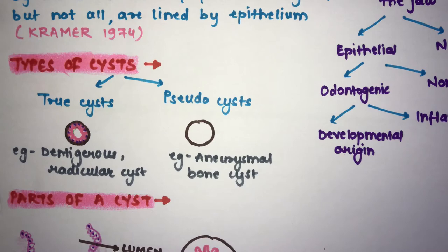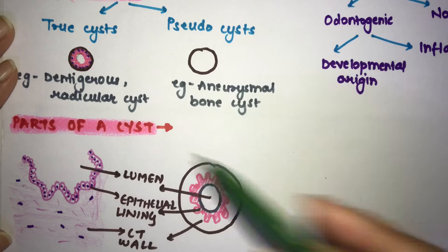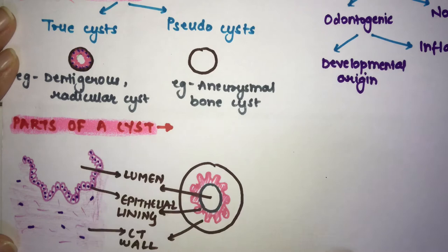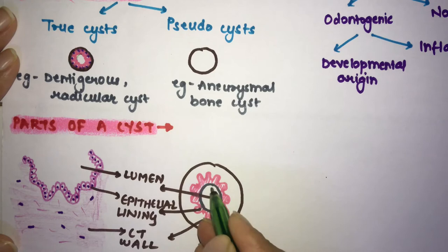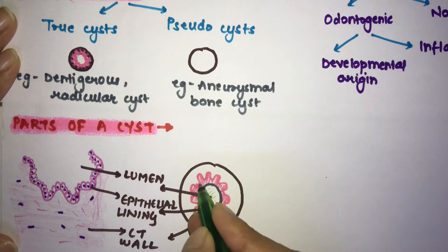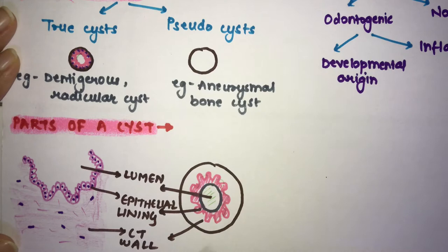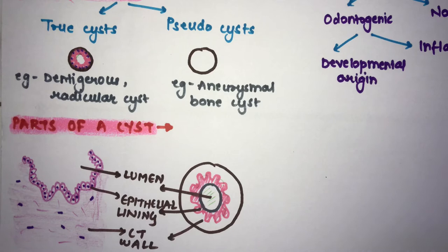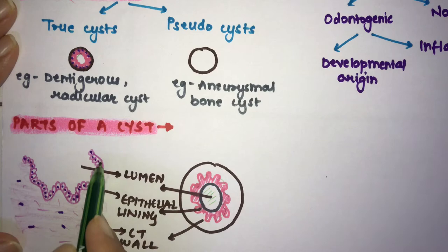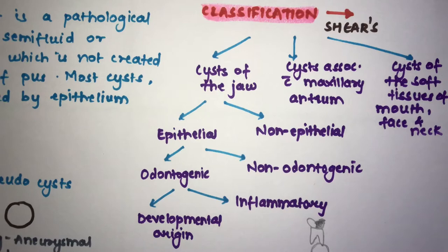The parts of a cyst are: the epithelium lining, the lumen, and the connective tissue wall. The lumen is the cavity filled with fluid, semi-fluid, or gaseous content. After that you find the epithelium lining, and then the connective tissue wall, which contains blood vessels, fibroblasts, and different cell types. This is how it looks under the microscope.